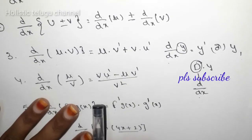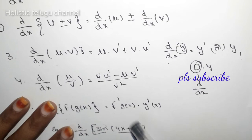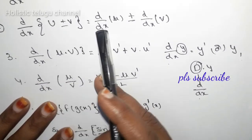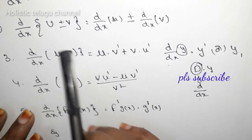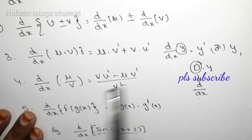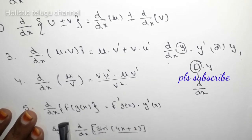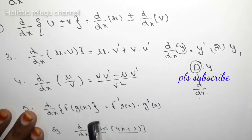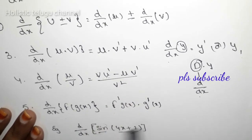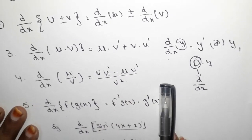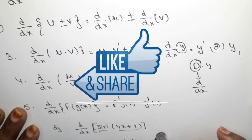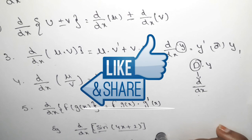I have done the differentiation. It means for u plus v or u minus v, we need to know the two functions — if functions are plus or minus, we do them by addition or subtraction, then differentiate. Please like, share, and subscribe. Thank you for watching.